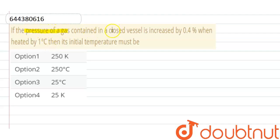If the pressure of a gas contained in a closed vessel is increased by 0.4 percent when heated by one degree Celsius, then its initial temperature must be. Okay, so here we have to find out initial temperature of the system.